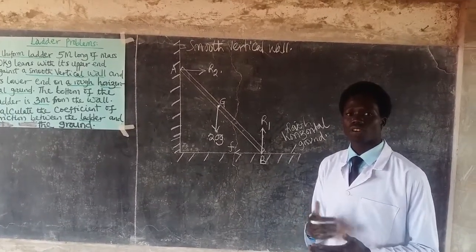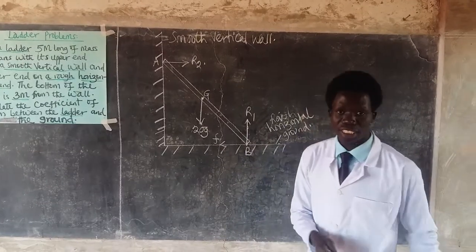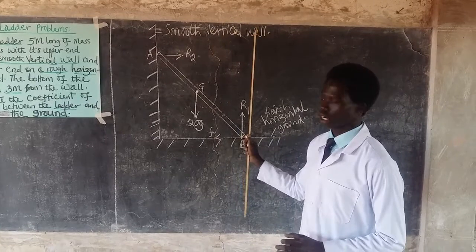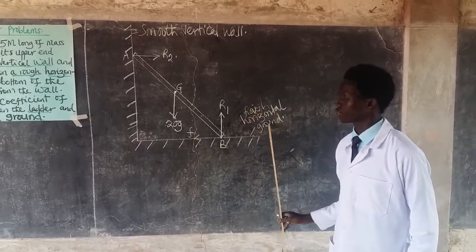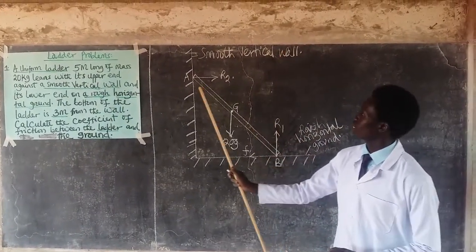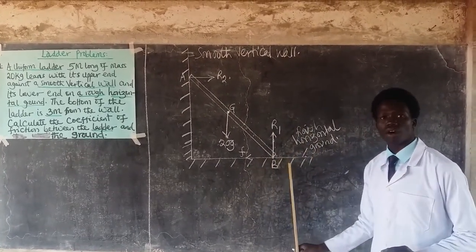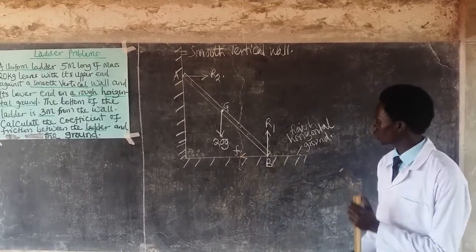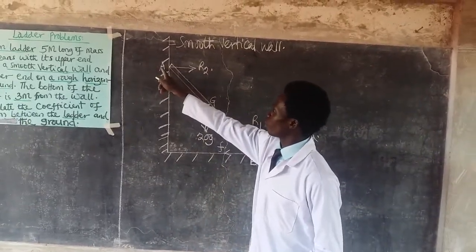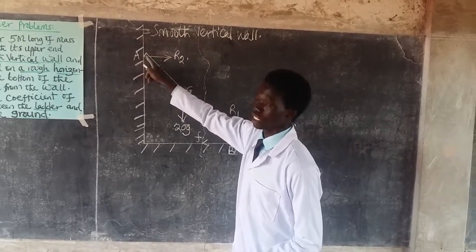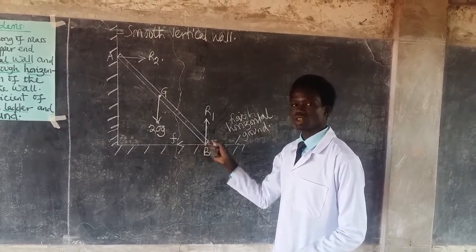We have a diagram showing a ladder with all the forces acting on it. The upper end of the ladder is resting on a smooth vertical wall, and the lower end is resting on a rough horizontal ground. We label point A where the ladder meets the wall, and point B where the ladder meets the horizontal ground.